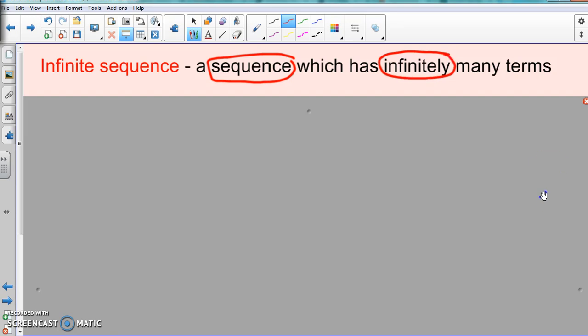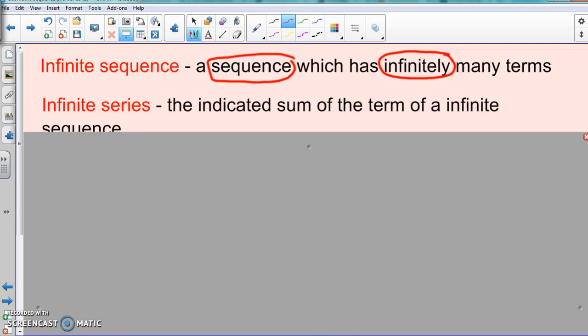So keywords for this definition is sequence. Infinite sequence is a sequence in which it has infinitely many terms. Actually, the words are in the definition, so that should be something you should remember. Then there's infinite series. Again with this one, series deals with sum or adding numbers together to get a final answer. So infinite series is the indicated sum of the terms of an infinite sequence.